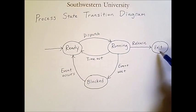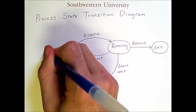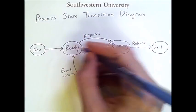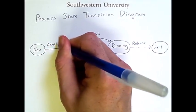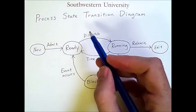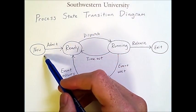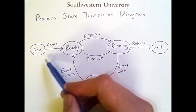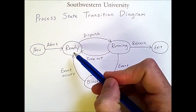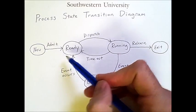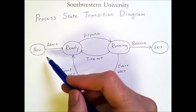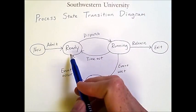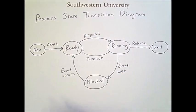The exit state allows the process to clear up all its data from memory and release all its resources, so the OS still has work to do when the process is in the exit state, but the process itself is no longer running. Similarly, there is a new state with a transition labeled admit. When you first run a process, you create a process control block, and at that point the process is in the new state. Before it can be in the ready state, the OS has to allocate memory and load its code into memory. This five-state model does a pretty good job of demonstrating the complexity in an actual operating system.